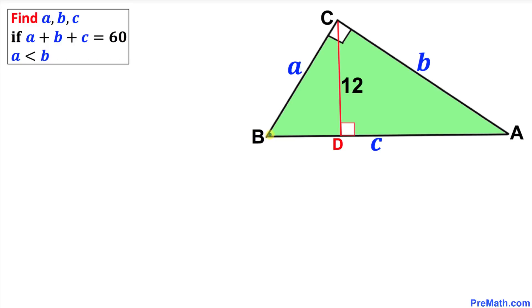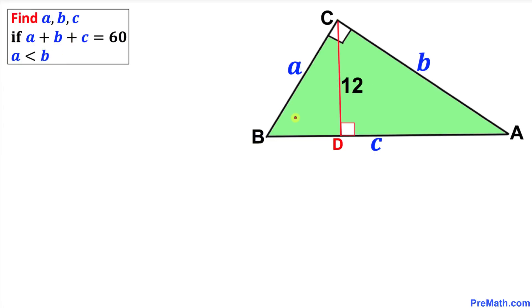Welcome to pre-math. In this video tutorial we have got a right triangle ABC along with an altitude of 12. We are going to find the values of sides A, B, and C such that A plus B plus C equals 60, and moreover A is less than B. Let's go ahead and get started with the solution.